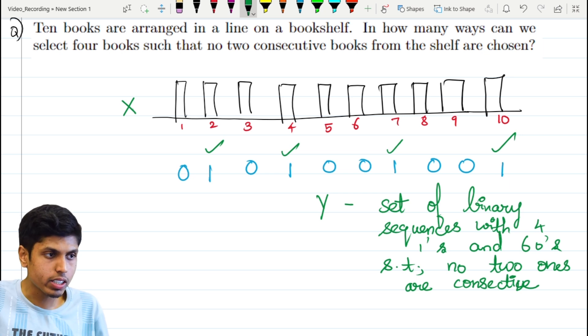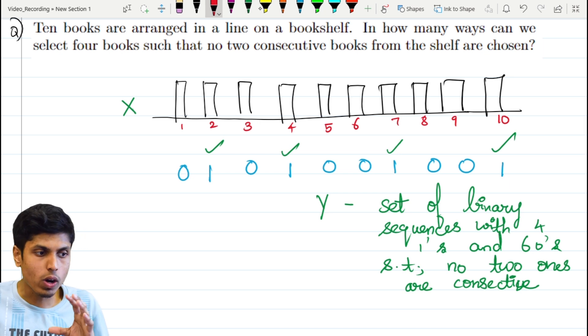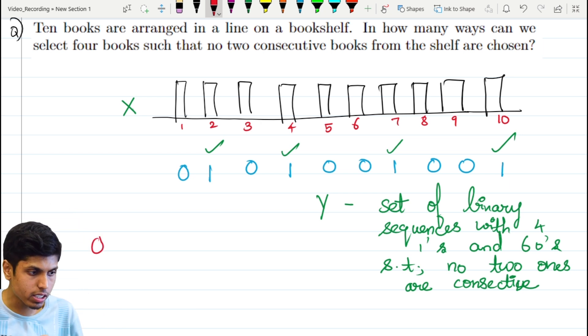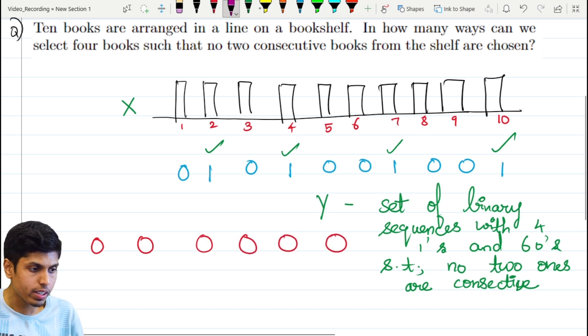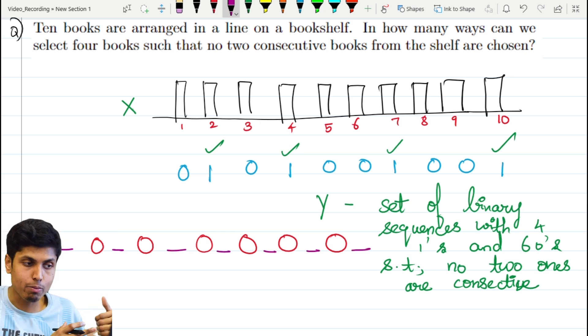Counting set Y is not very difficult. Since ones should not be consecutive, we can consider the zeros first being placed. We would have 6 zeros: 1, 2, 3, 4, 5, 6 zeros. Six zeros shall produce 7 gaps in between them. You should also consider the gap at the start and the last. And out of these 7 gaps, we need to select 4 gaps.